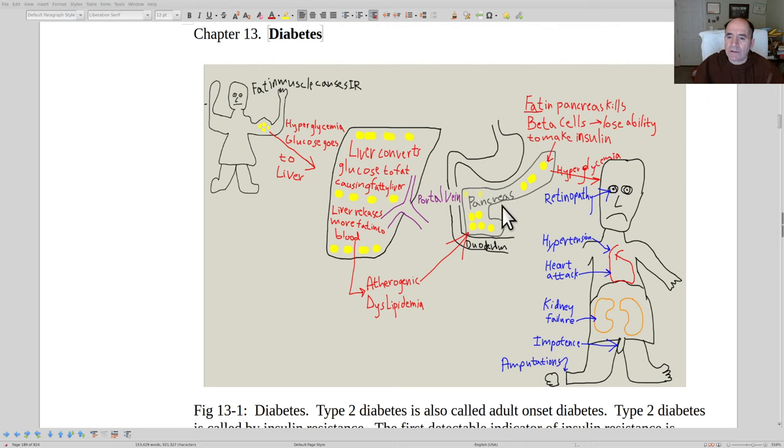Fat accumulation in the beta cells of the pancreas, they're the ones that make the insulin, will lead them to lose their ability to make insulin. And once the person can't make insulin anymore, then they become insulin dependent. So, you can think of it, diabetes.